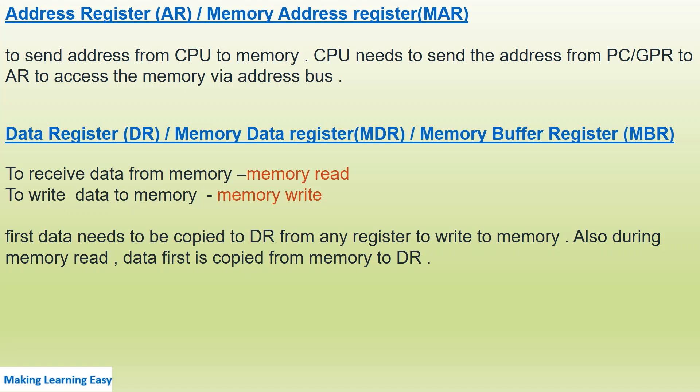The address register, or memory address register, is used to send an address from the CPU to memory. The CPU needs to send the address from the program counter or any general purpose register to the address register to access memory. Whichever memory location the CPU needs to access, it first sends the address to the address register.